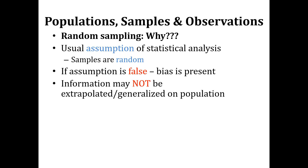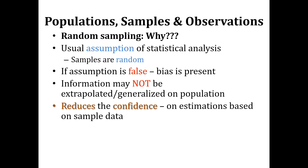This information may not be extrapolated or generalized onto the population. As with the wolves example, if hungry voles have a higher chance of being trapped, the information gathered on average mass may not be generalized to the population. It reduces the confidence in estimations based on sample data, because we are relying on observations from the sample and cannot take observations from every member of the population.